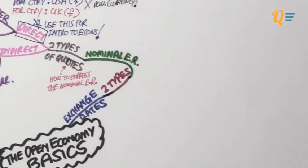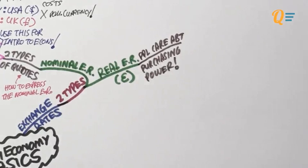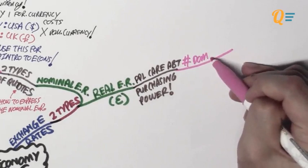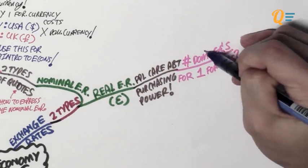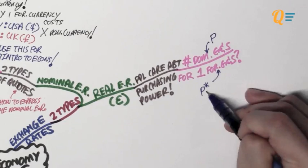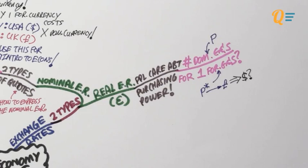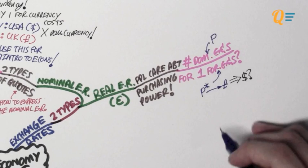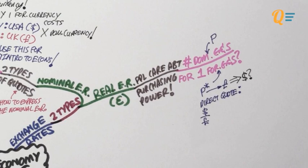Now let's move on to the real exchange rate, which is represented by epsilon. Why do we need it? Because people care about their purchasing power — they want to know how many units of domestic goods and services they have to give up for one unit of foreign goods and services. The generic price level for domestic goods and services is denoted with P, in US dollars. The generic price level for foreign goods and services is denoted as P-star, in pounds. We need to convert pounds into US dollars so we can do a proper comparison.